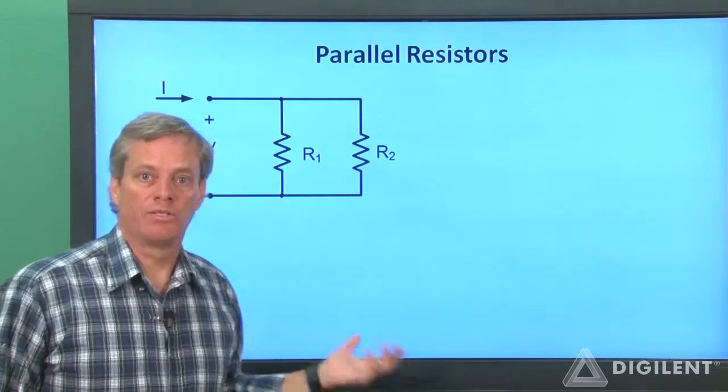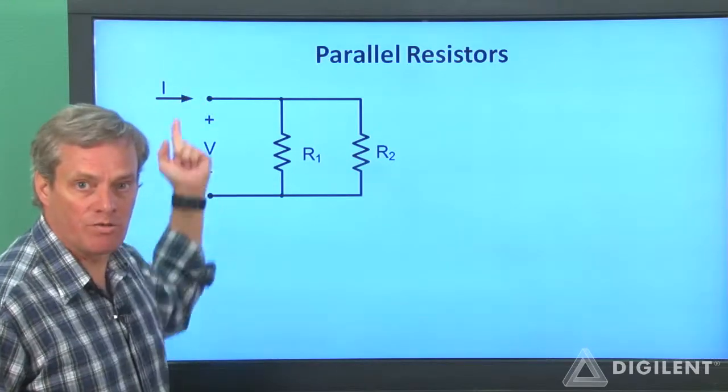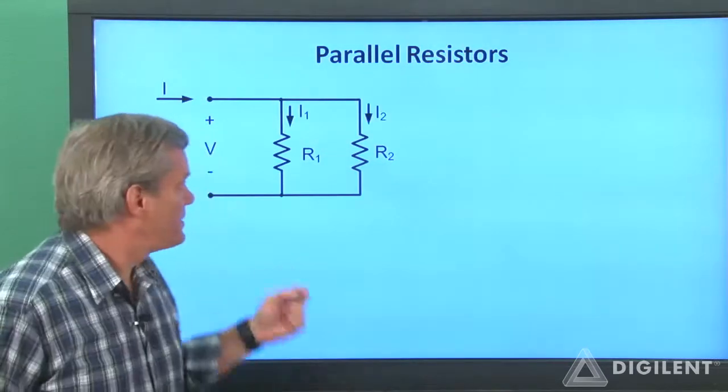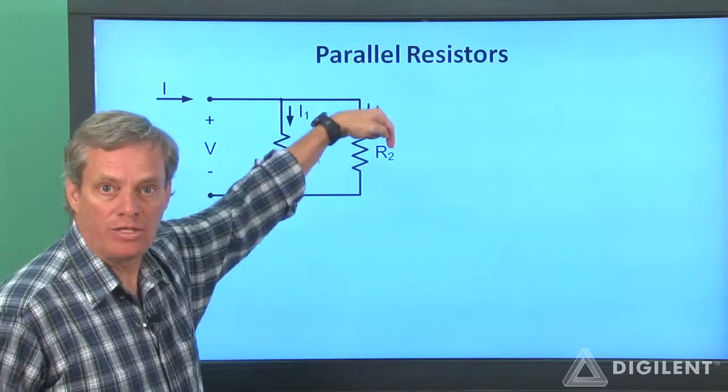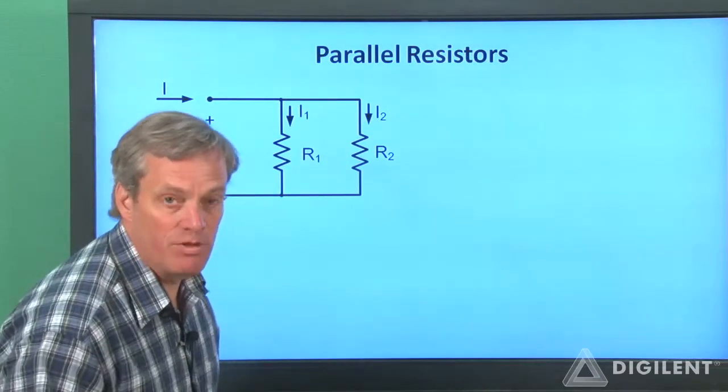As always with passive elements, we've followed the passive sign convention when we define V and I. Now let's define I1 and I2 as the currents through the individual resistors.